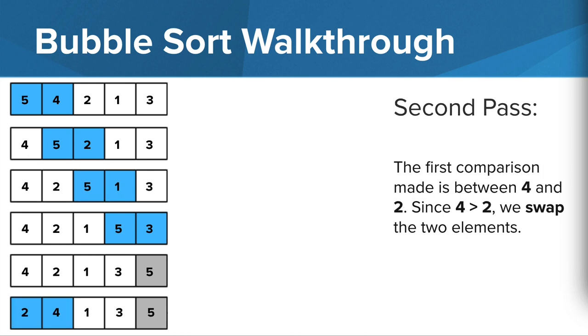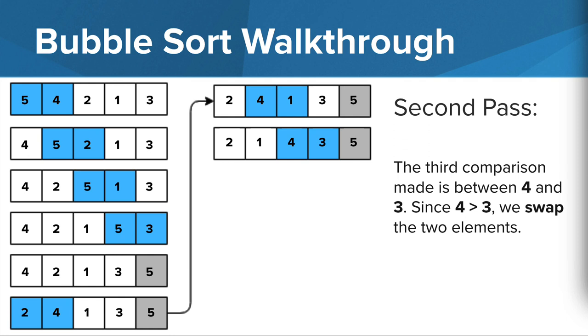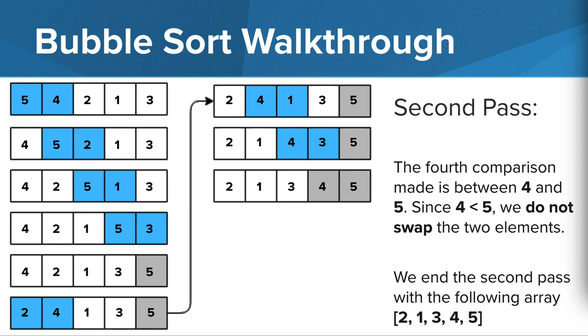Now we move on to the second pass. The first comparison made in the second pass is between 4 and 2. Since 4 is greater than 2, we swap. We then compare 4 and 1, and we swap those two. And then we compare 4 and 3, and then we swap again. In this pass, we move the 4 to its correct position.